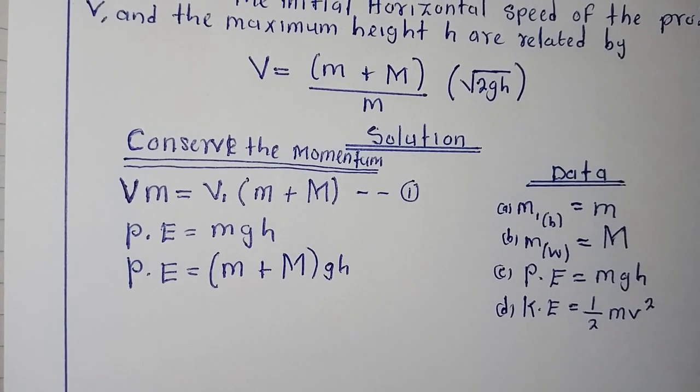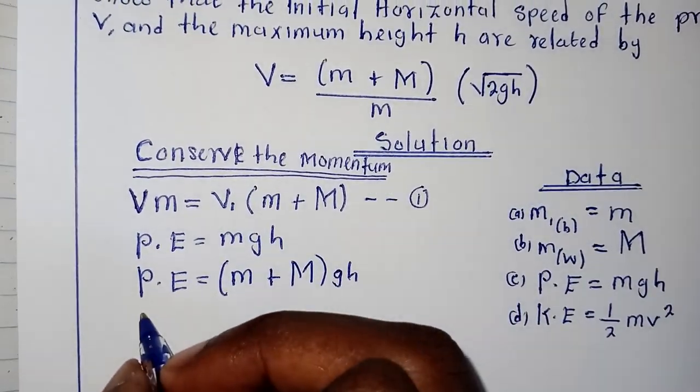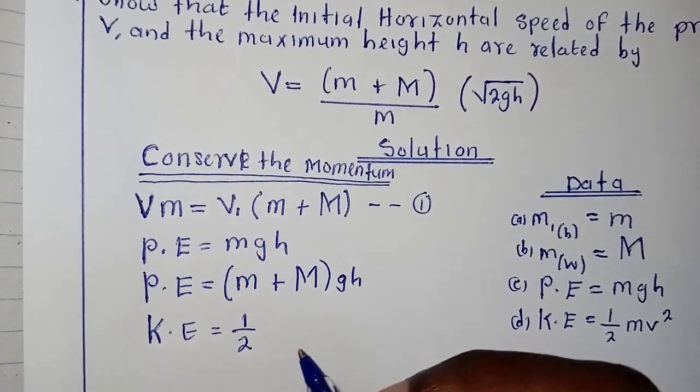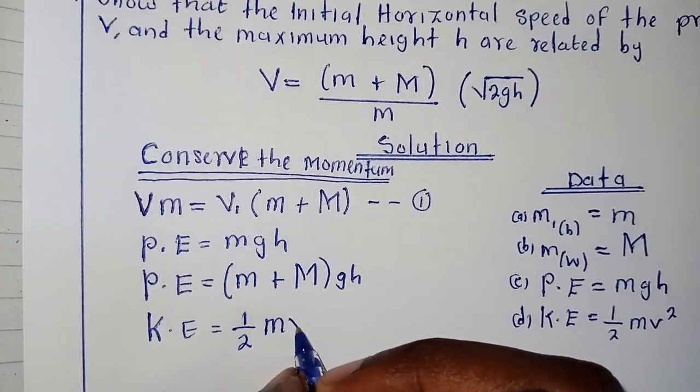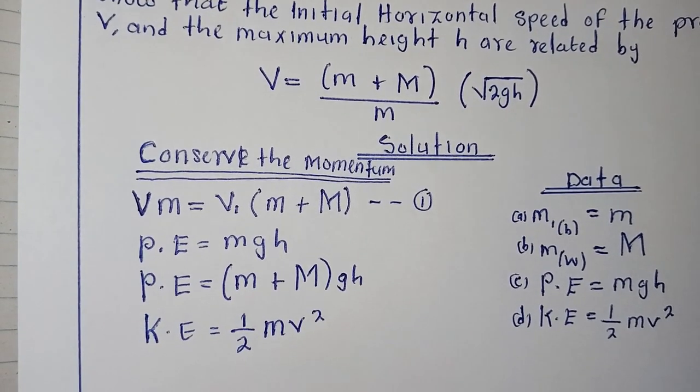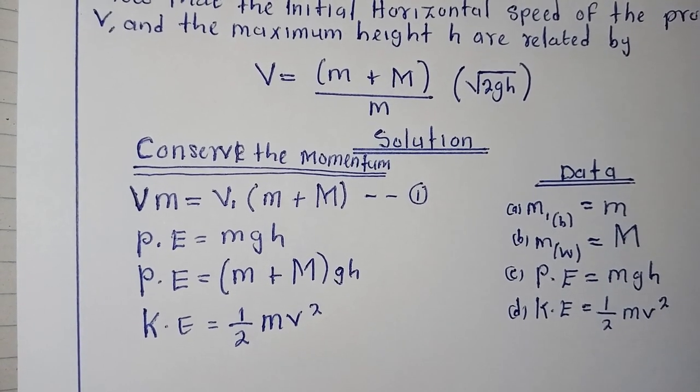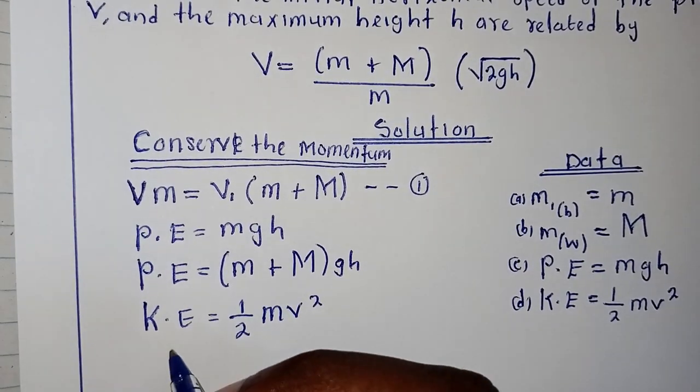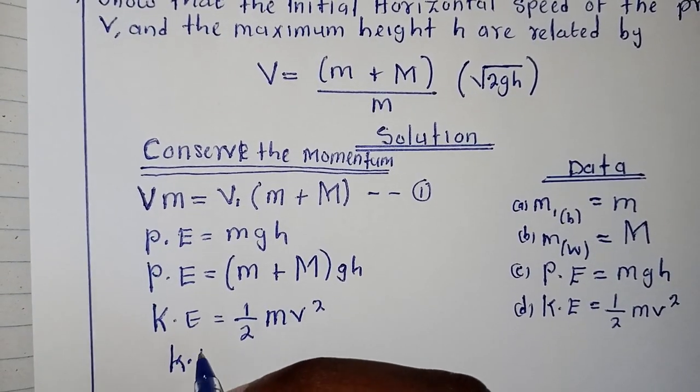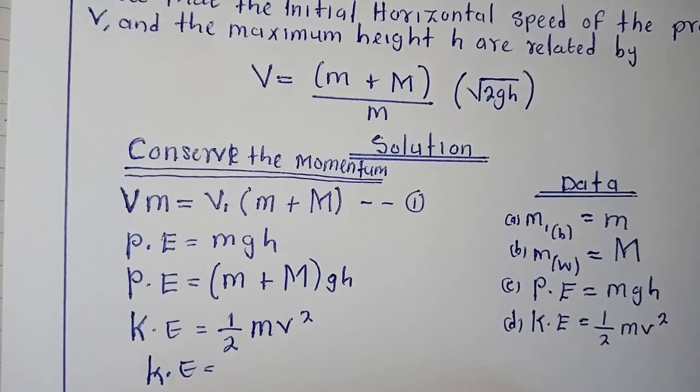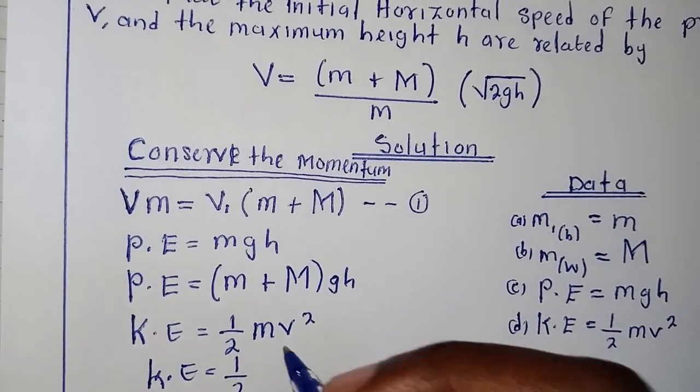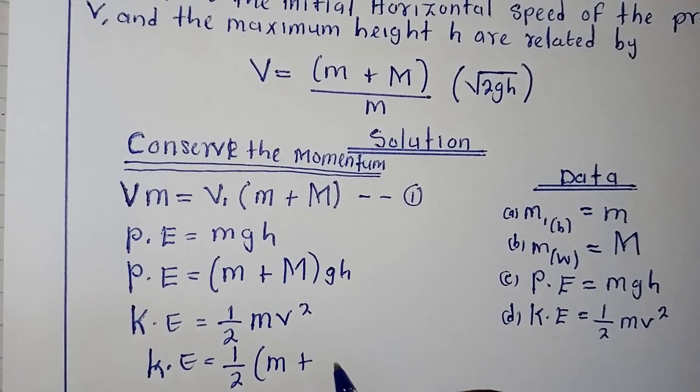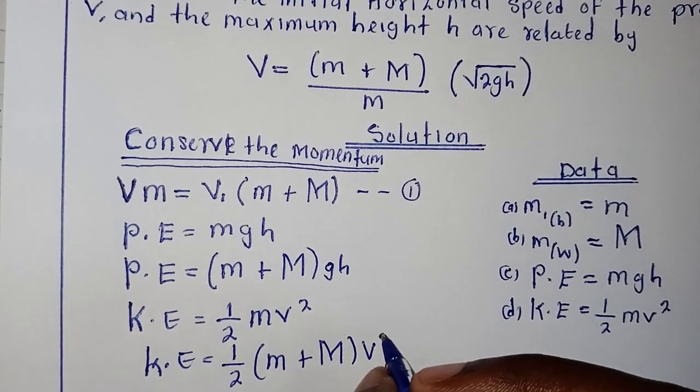We know that the kinetic energy is equal to half mv squared. Here what is this mass? We are going to place m plus M and V to the power 2.